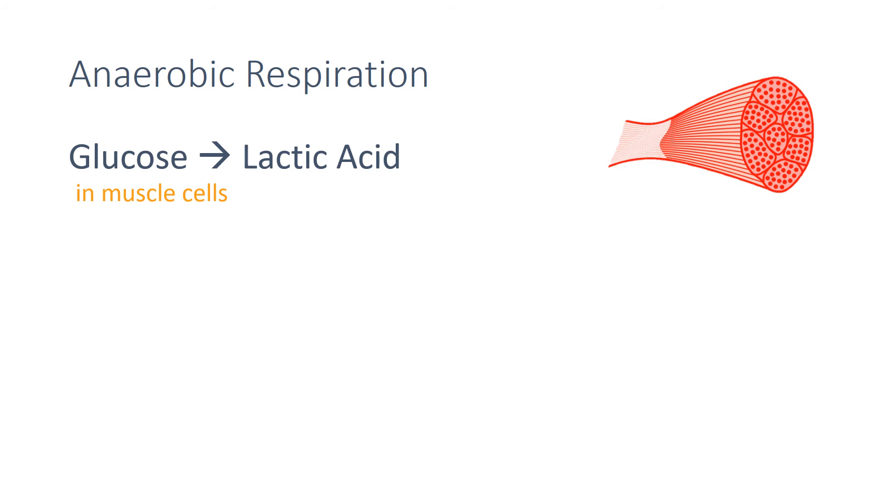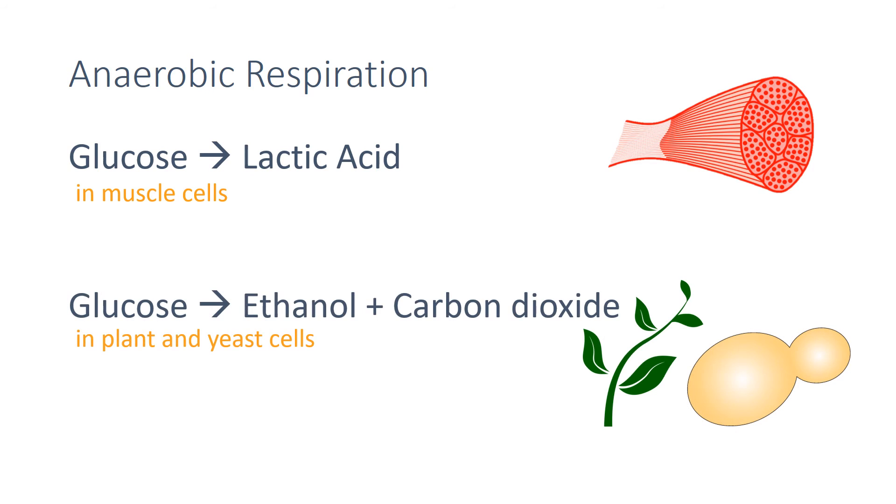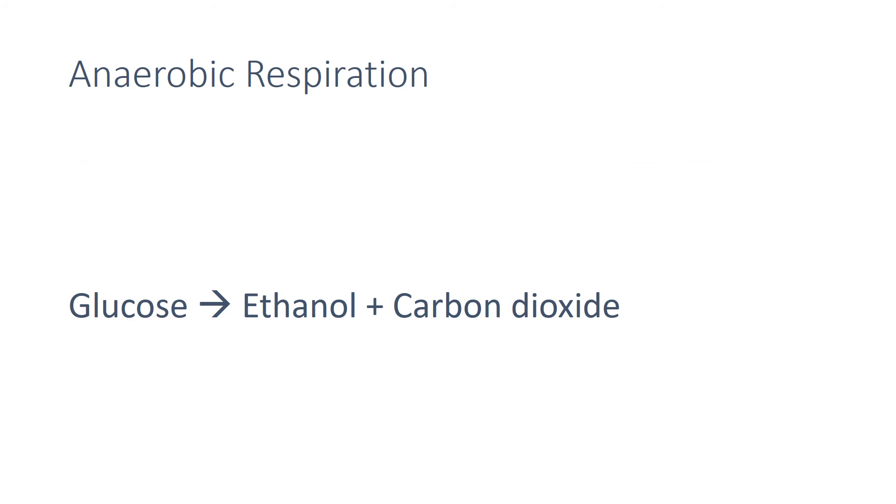A different form of anaerobic respiration takes place in both plant and yeast cells, where glucose is broken down into ethanol and carbon dioxide. This process is known as fermentation and the products can be useful to us.